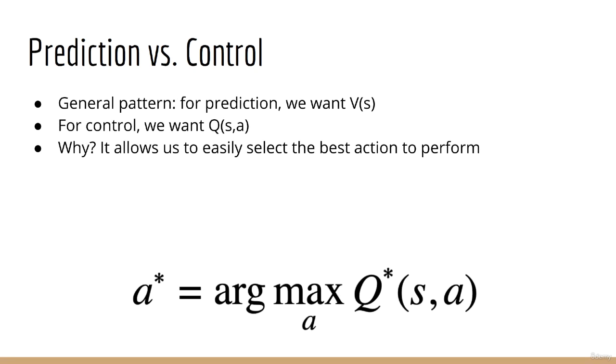As a general pattern, note that for the prediction problem, usually we are interested in finding V, which is what we just did. For the control problem, we are usually interested in working with the action value, Q.